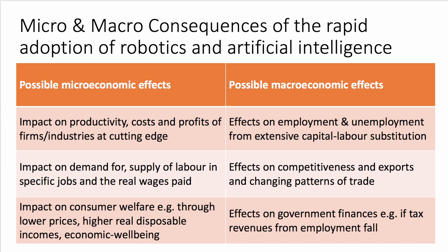Another micro effect is the labor market consequences — the impact on the demand for and supply of labor in particular jobs affected by robotics, and the consequences for wages and earnings. Routine, lower-paid work has been and remains very susceptible to automation. Even on Wall Street, many financial analysts are being replaced with software or so-called robo-advisors. Who knows how many jobs are at high risk of being automated in the next 10, 15, 20 years. But equally, new jobs may be created — think app designers, software engineers. There's lots of scope for using the labor market as part of your synoptic analysis and evaluation.